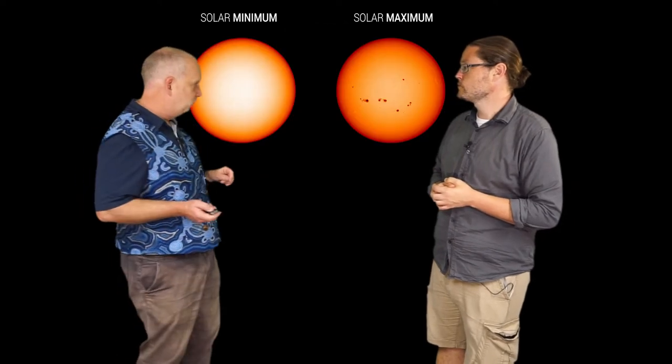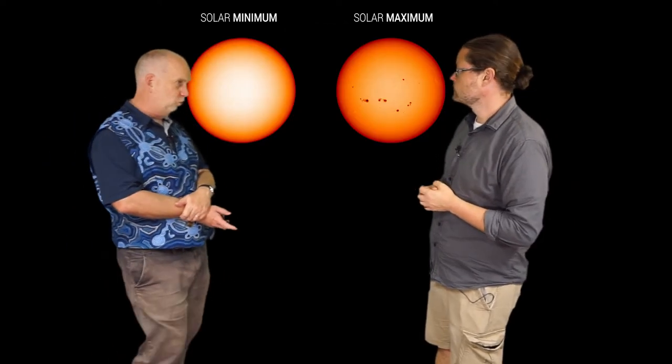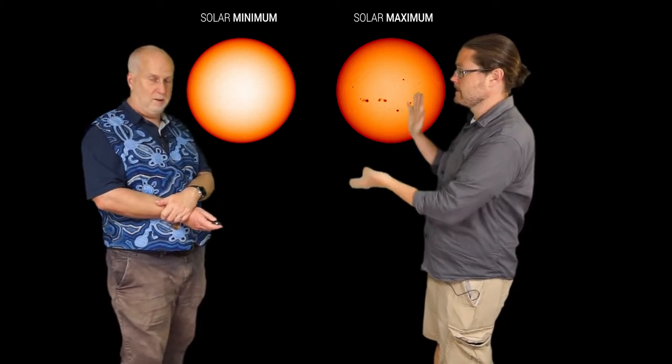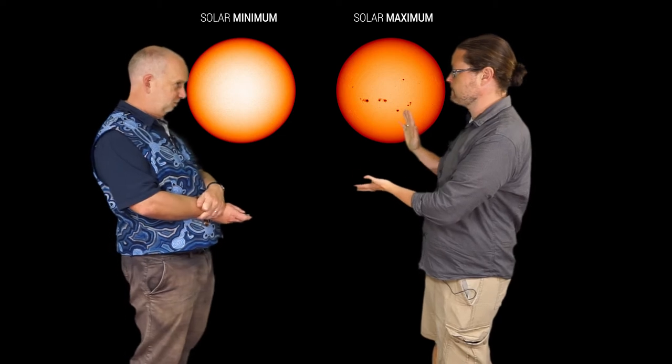And it turns out that the Sun has a cycle. So at certain times the Sun has very few sunspots and sometimes it has more. So here we've got pictures of the Sun during what's called the solar minimum. So there's not a lot of activity happening, not a lot of sunspots, not a lot of these flares.